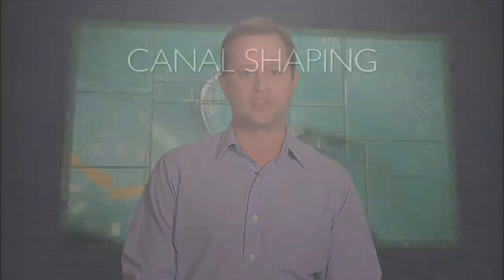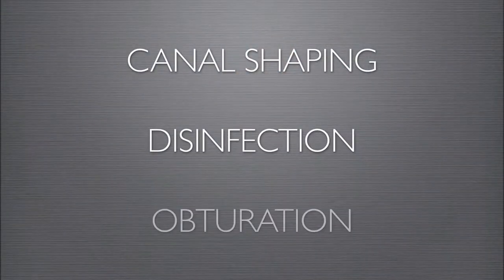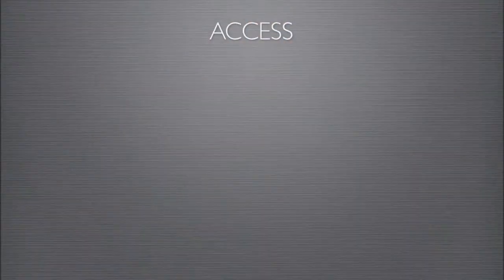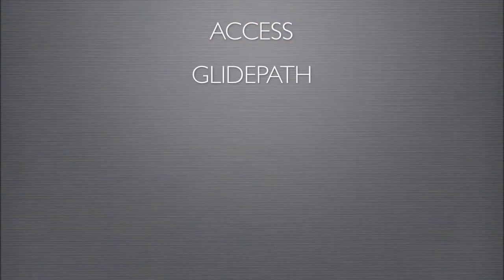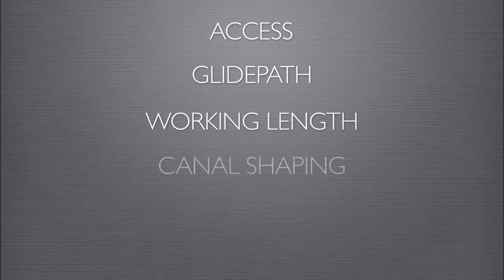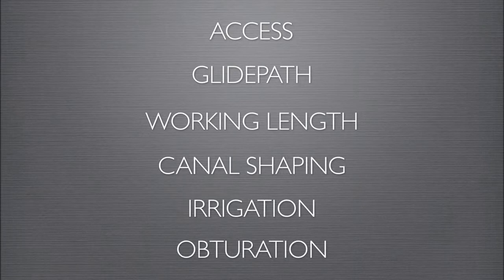Successful root canal treatment depends on proper execution of the following: canal shaping, disinfection, and obturation. Once my diagnosis is made, my typical treatment sequence will include access to the pulp chamber and root canal system, preparation and maintenance of a glide path, confirmation of working length, canal shaping, irrigation for disinfection, and finally obturation with a warm gutta approach — a technique such as GuttaCore.